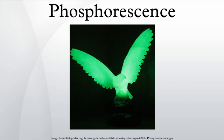Commonly seen examples of phosphorescent materials are the glow-in-the-dark toys, paint, and clock dials that glow for some time after being charged with a bright light such as a normal reading or room light. Typically the glowing then slowly fades out within minutes in a dark room.